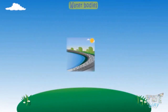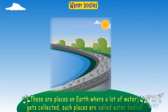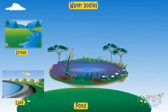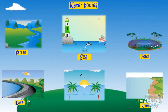Now let's learn about water bodies. These are places on Earth where a lot of water gets collected, and such places are called water bodies. Different types of water bodies include streams, lakes, ponds, rivers, seas, and oceans.